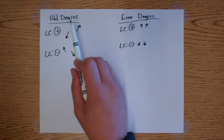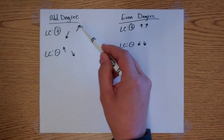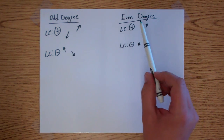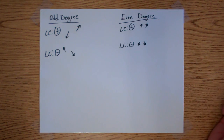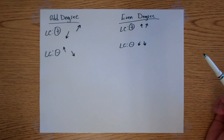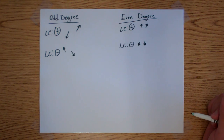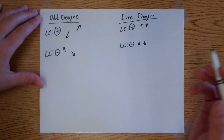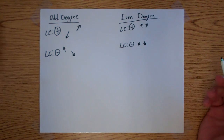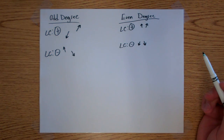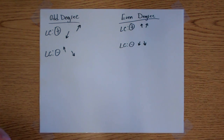Remember: odd means opposite — the tails point in opposite directions. Even means equal — they point in the same direction. So: positive odd = down, up. Negative odd = up, down. Even positive = up, up. Even negative = down, down. Your degree is your highest exponent, and your leading coefficient is the number with that term.